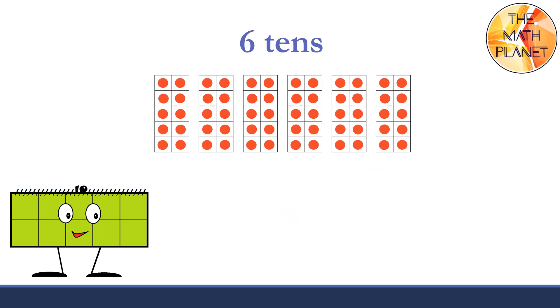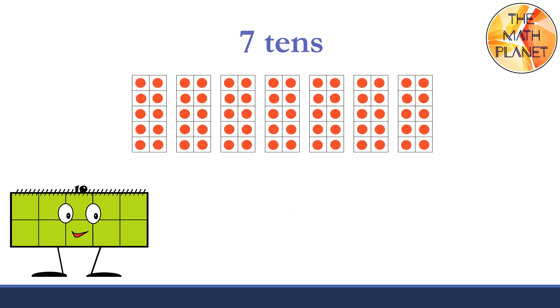Six tens make 60. S-I-X-T-Y, 60. Seven tens make 70. S-E-V-E-N-T-Y, 70.